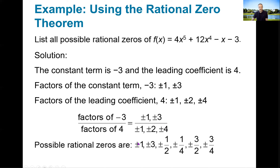I put a plus or minus out in front of a parenthesis instead of in front of every single term. So the possible rational zeros are: ±1/1, ±3/1, ±1/2, ±1/4, ±3/2, and ±3/4. That is every single possible rational zero of this polynomial — a total of 12 possible rational zeros.